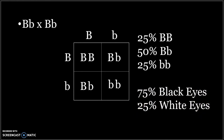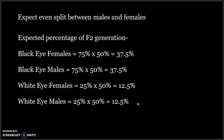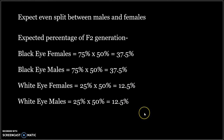We think the trait is autosomal, which means it is not located on the X chromosome, so we expect a roughly even split of males and females. To get the expected for black-eyed females, we multiply 75% — the chance that an individual has black eyes — by 50% — the chance that an individual is female — which gives 37.5%. We expect 37.5% of the F2 generation to be black-eyed females, 37.5% to be black-eyed males, 12.5% to be white-eyed females, and 12.5% to be white-eyed males. We will use these expected percentages to find the expected value for the E variable of the chi-squared equation.